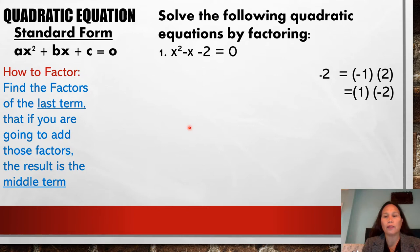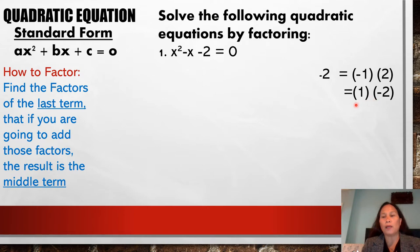Next, from those given factor pairs, find which one, when added together, gives the middle term. What is our middle term? The coefficient of the middle term is negative 1. So, which pair, when added, gives negative 1? It's the second pair. When we add with different signs, we subtract and copy the sign of the larger number. Therefore, these are now considered our factors.